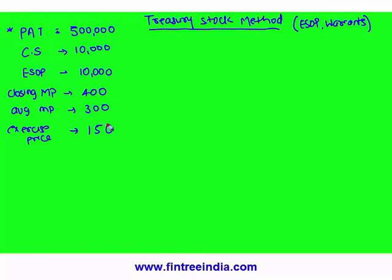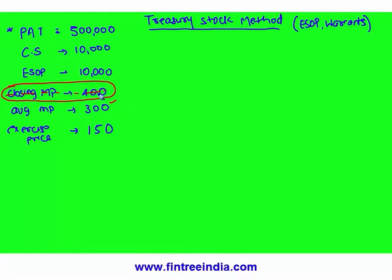The first thing to remember in this calculation: closing market price will never be used for diluted EPS calculations. It is the most common trap put on exams. We will never use closing market price — we will always use average market price. So on average, the price of the stock was 300 and exercise price was 150, meaning the employee can buy the share at almost half the price.